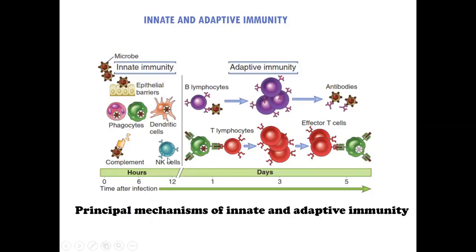Innate immunity is a rapid response occurring within minutes or hours. One mechanism is provided by epithelial cells which prevent infection, while other mechanisms such as phagocytic cells, dendritic cells, NK cells, and complement eliminate antigens. Adaptive immunity is mediated by lymphocytes and their products. For instance, B cells when they encounter antigen produce antibodies which block or neutralize microbes, while T lymphocytes eliminate intracellular microbes.